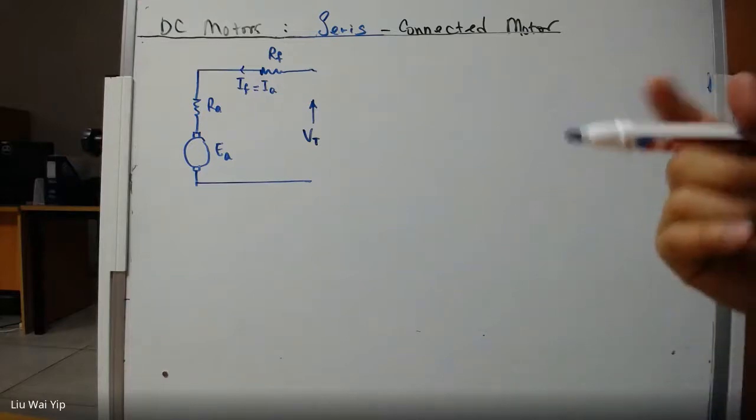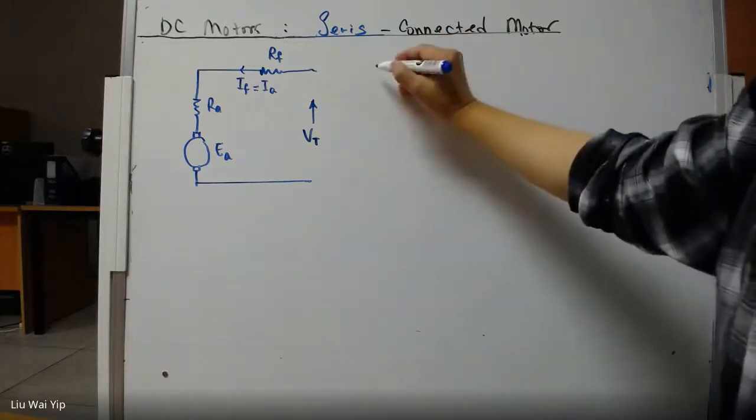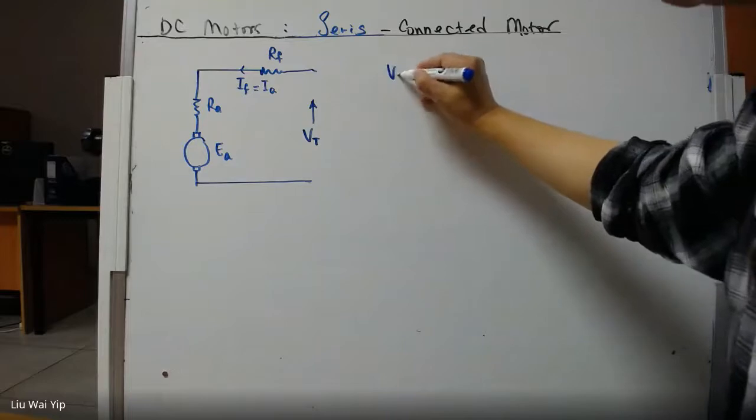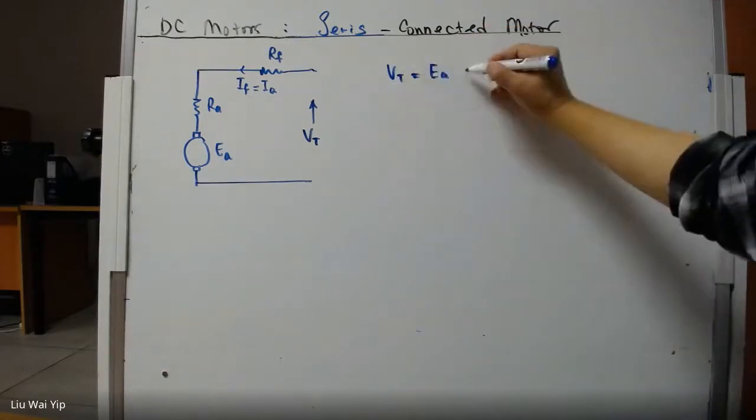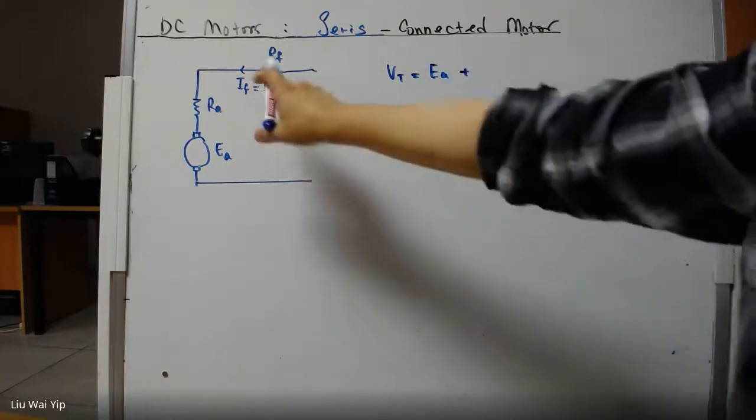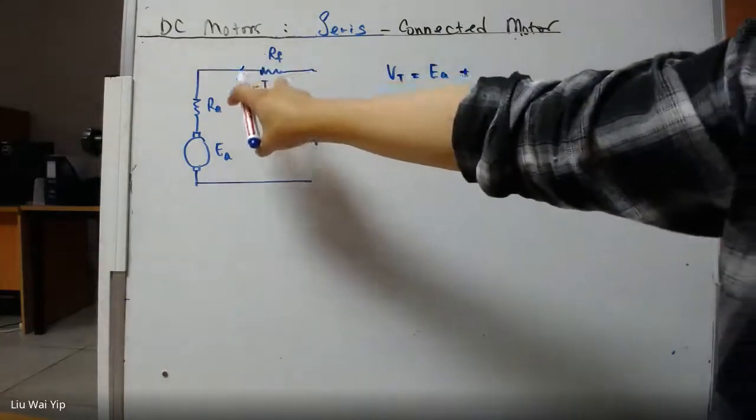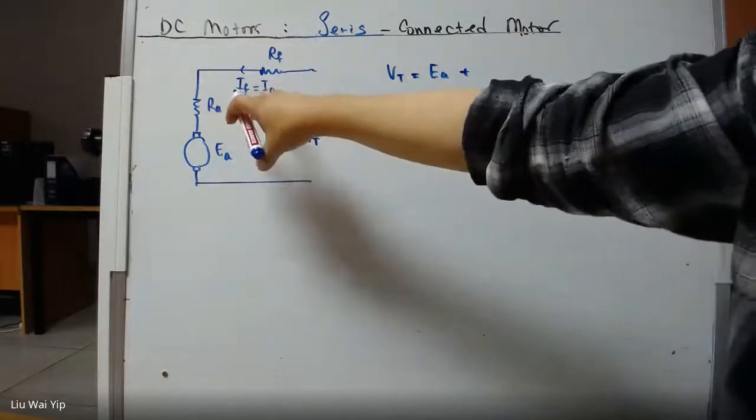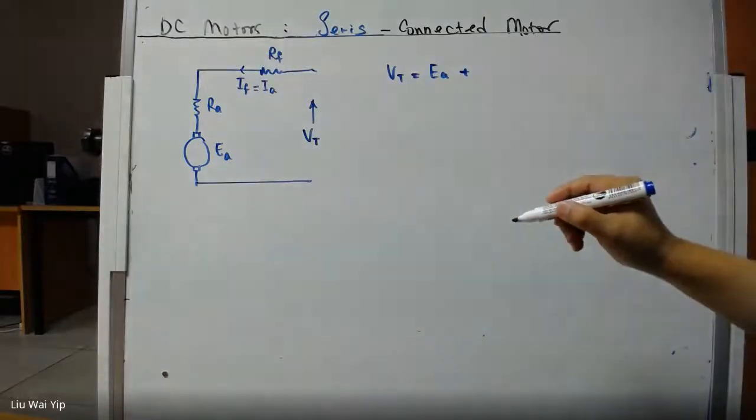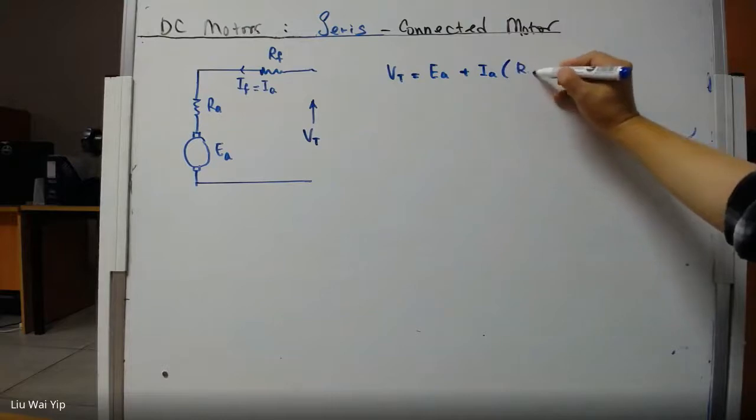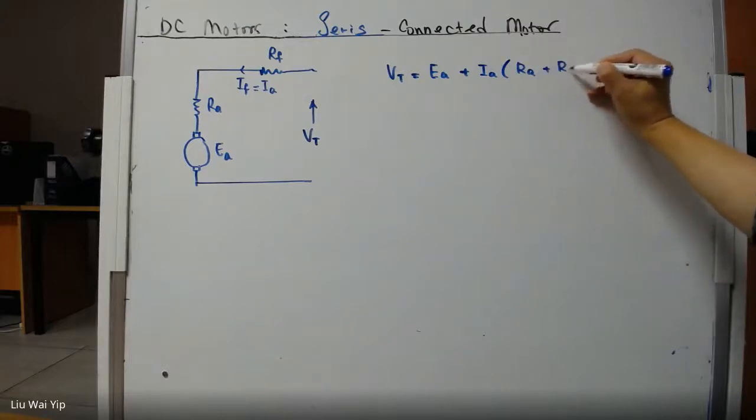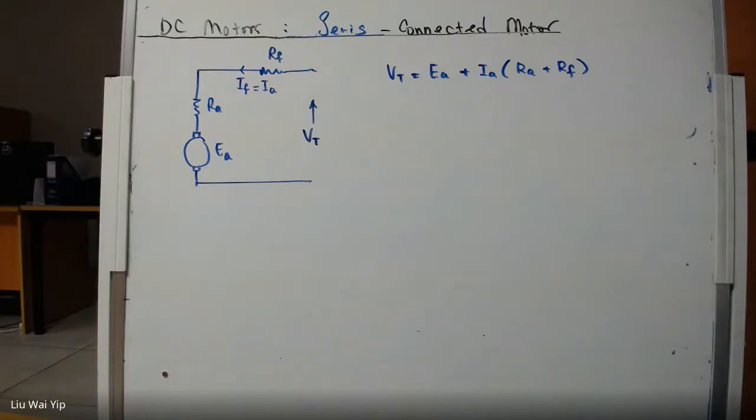So in this case, the total voltage here is going to be EA, plus the voltage drop across the armature resistance and also the field resistance. So VT equals EA plus IA times RA plus RF. This is the main concept of the series connected motor.